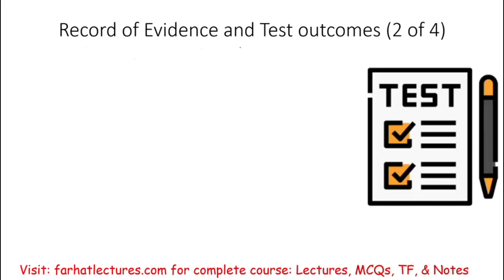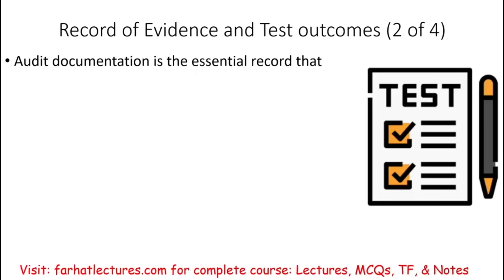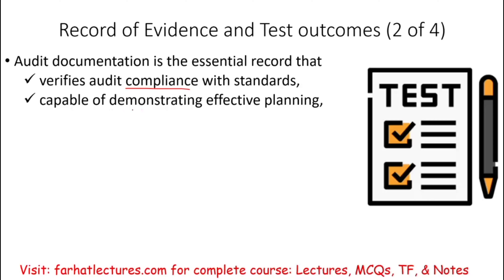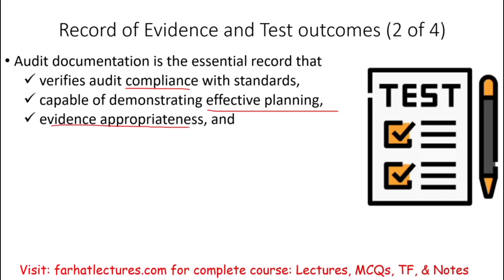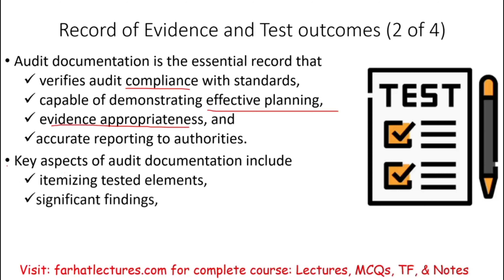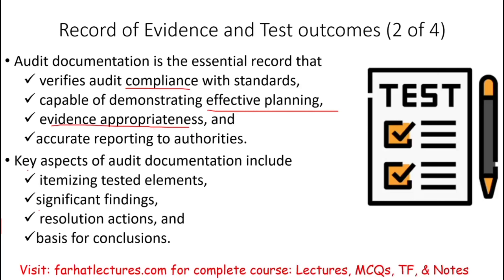The second purpose is a record of evidence and test outcomes. Audit documentation here is essential because you're going to need the record verifying that you are in compliance with audit standards, capable of demonstrating effective planning, appropriate evidence, and accurate reporting to authorities. If you're being sued or reviewed by an authority like the PCAOB, you have to show what you did. Key aspects include itemized tested elements, significant findings, resolution actions, and the basis for your conclusion — and each client will have different significant findings and tested elements.